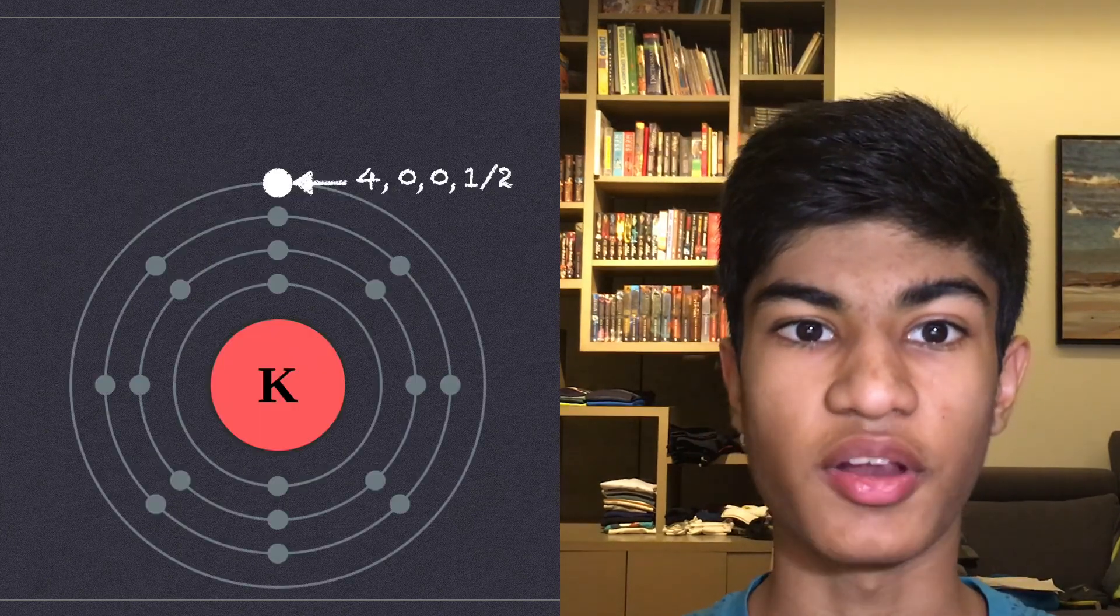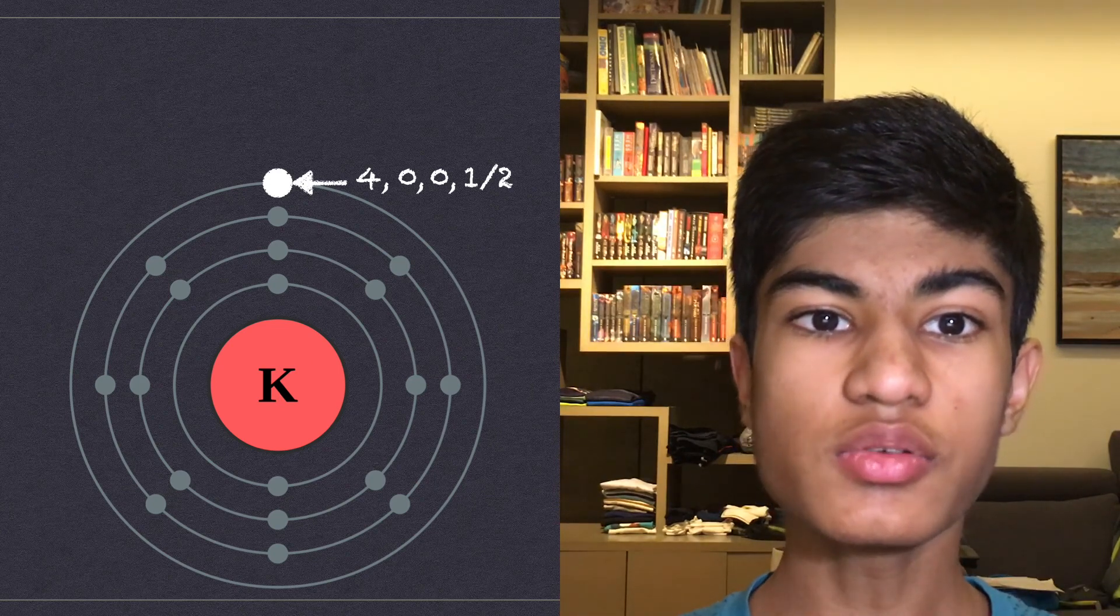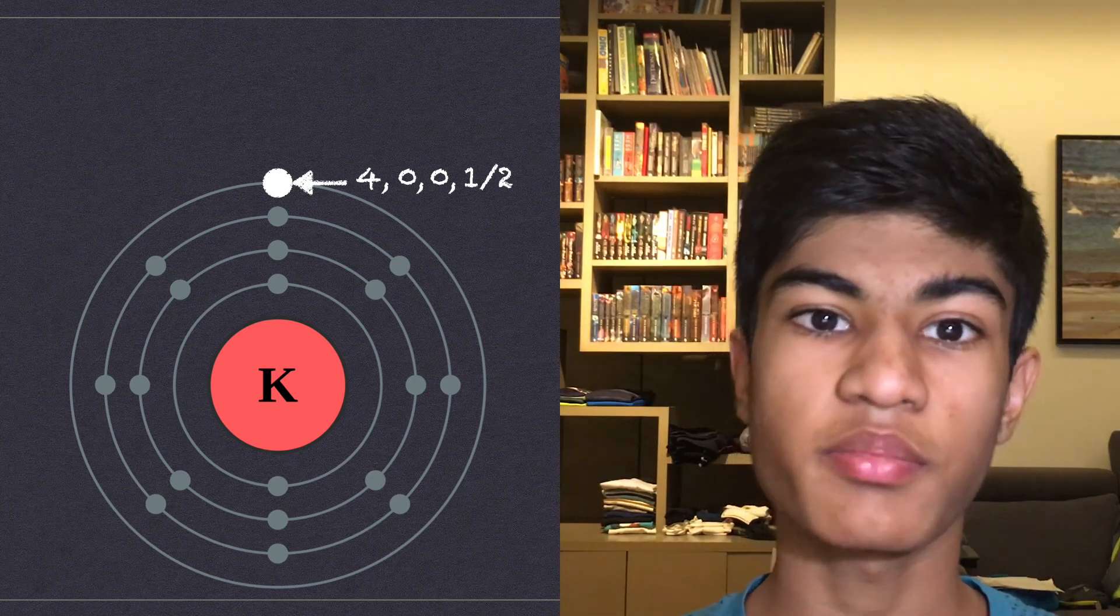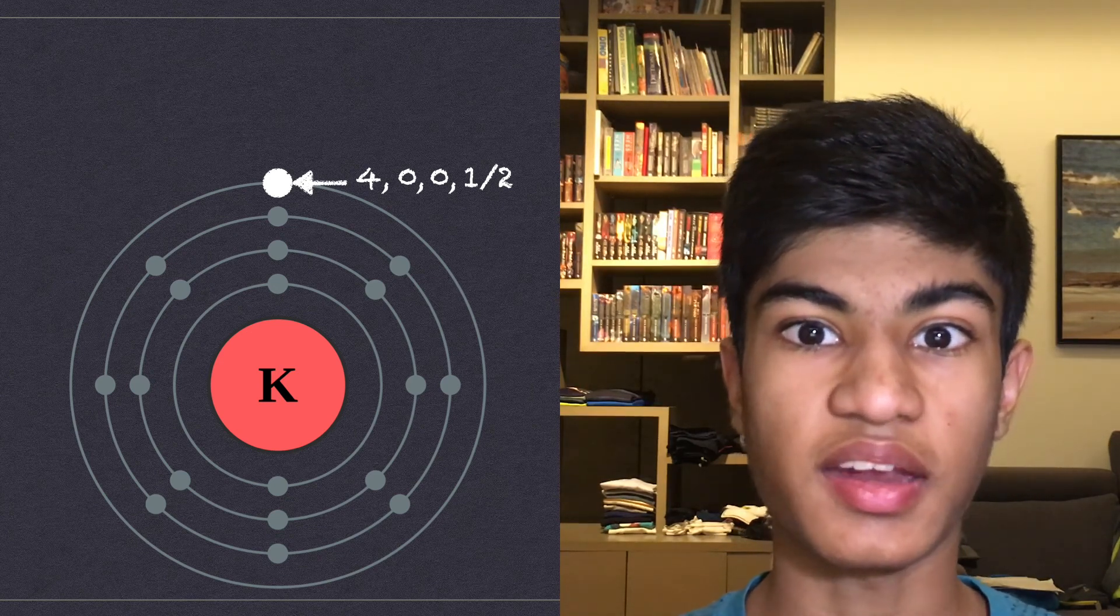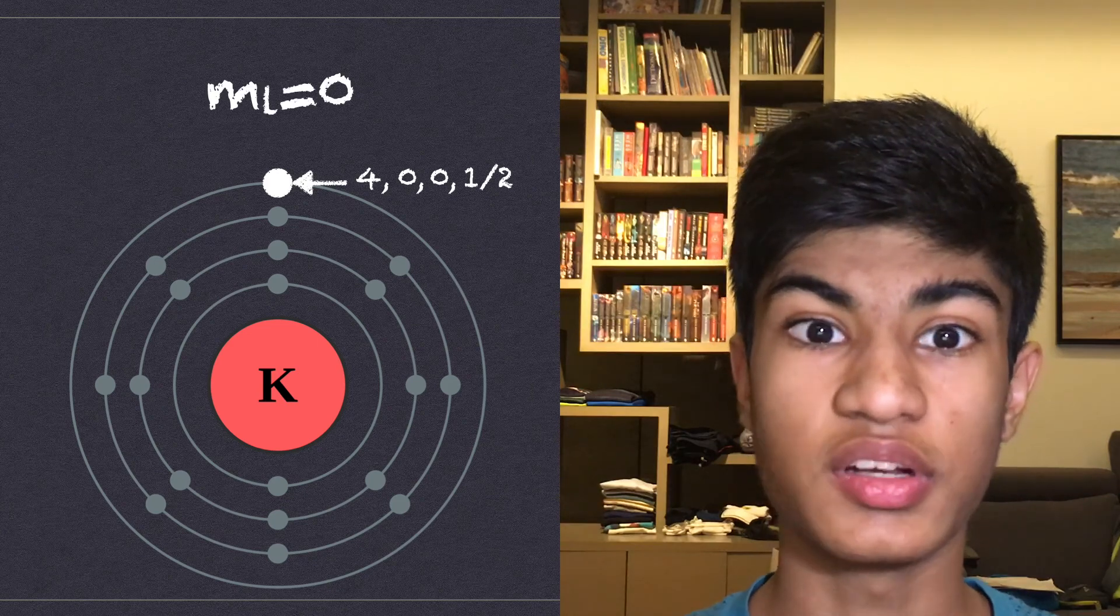So for an example, if an electron in the S subshell, the values of minus L to plus L are minus zero to plus zero. Since this is just zero, we know that ML, the magnetic quantum number, has to be equal to zero.